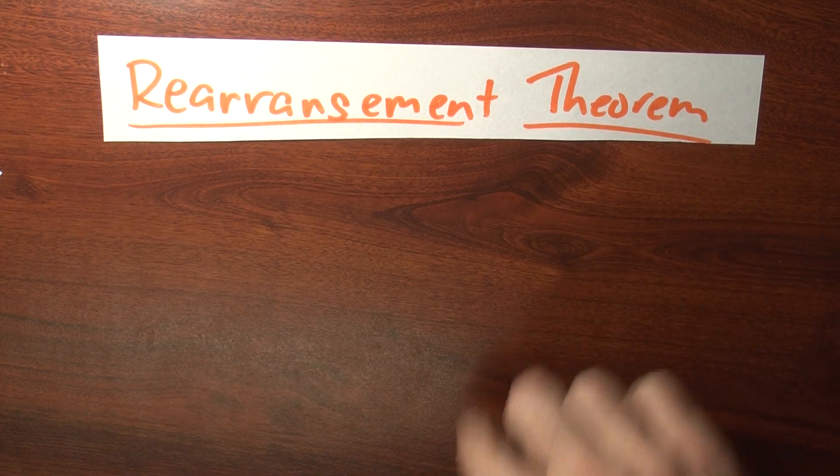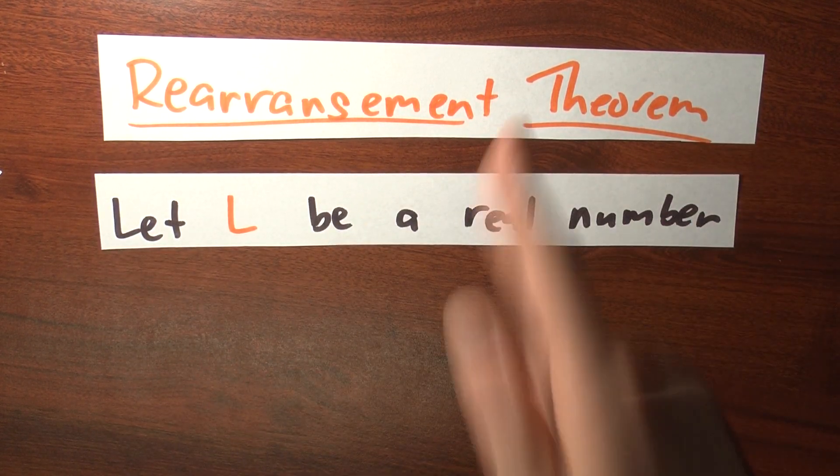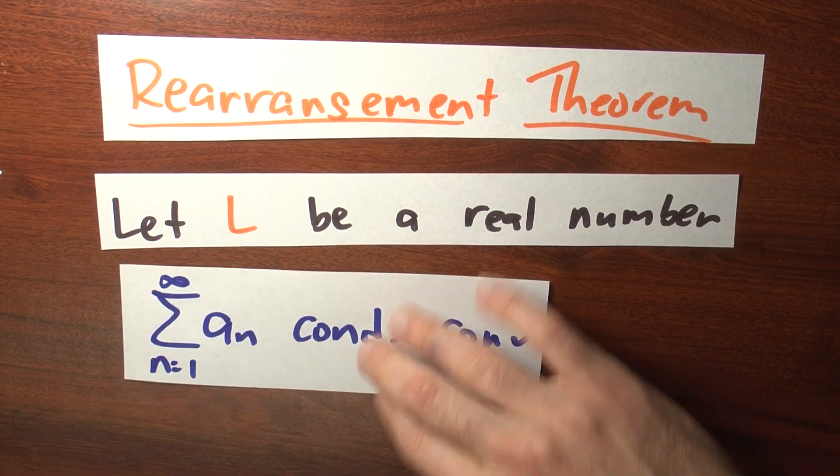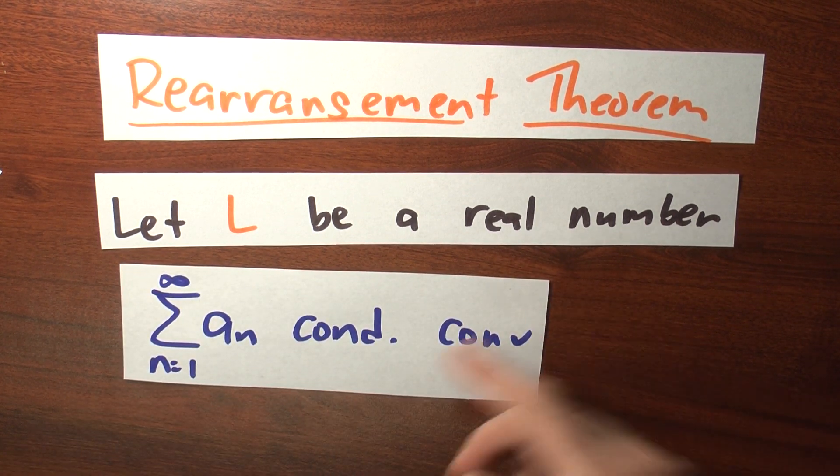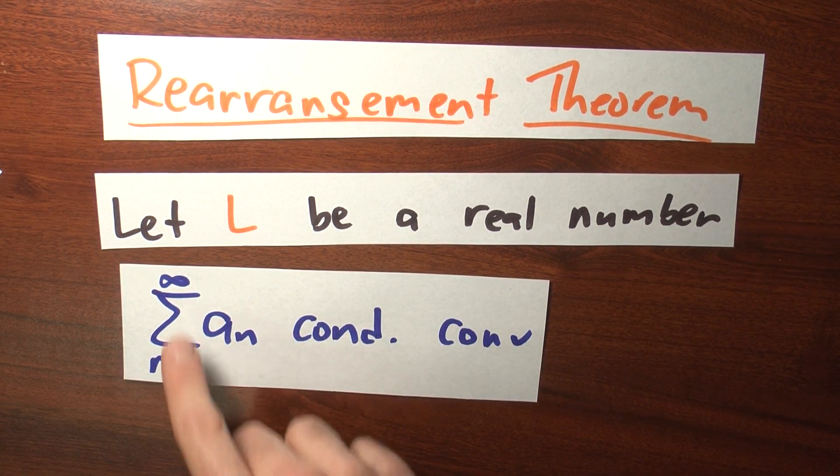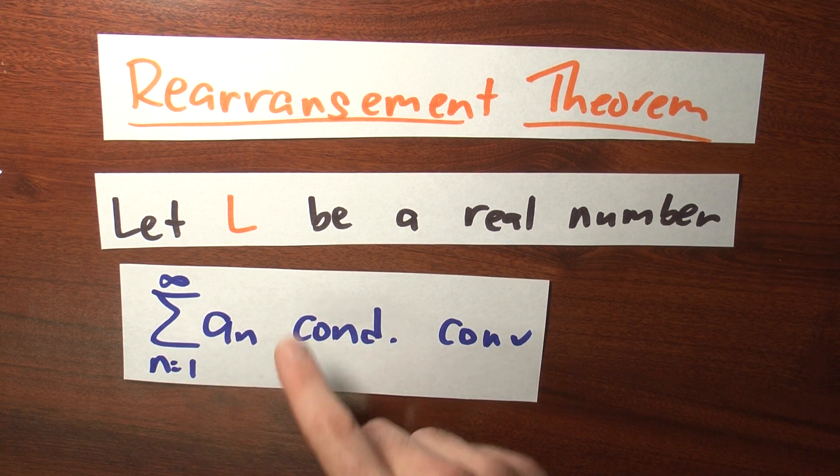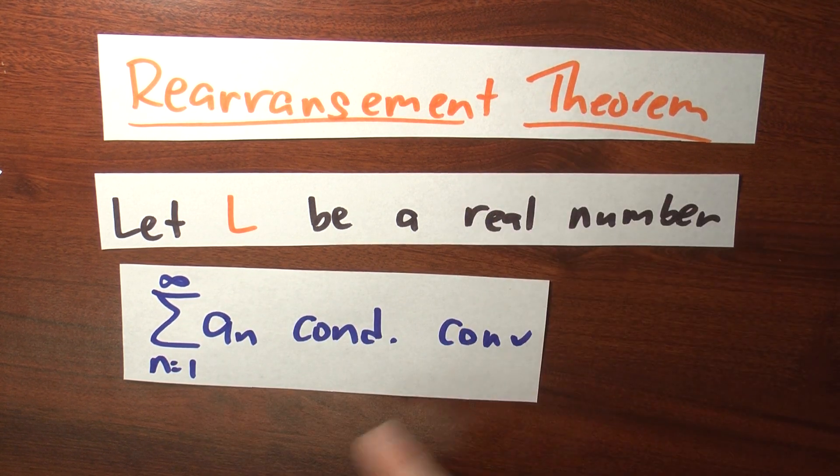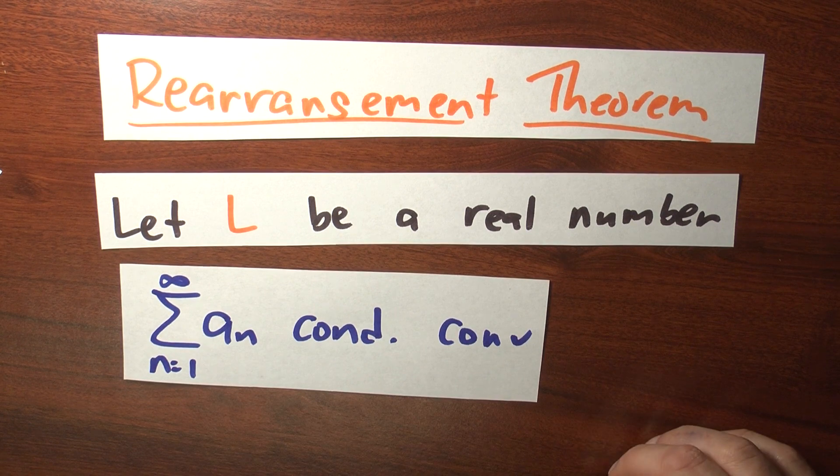What we're seeing here is the first glimpse of a theorem. It's a rearrangement theorem. Here's how it goes. Suppose that L is some real number. You get to pick L. And you've got a conditionally convergent series. In this case, I'm calling it the sum n goes from 1 to infinity of a_n. So L is a real number that you picked. And you're given this conditionally convergent series.